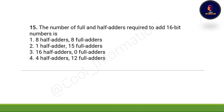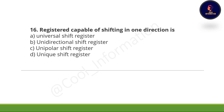Fifteenth question: The number of full and half adders required to add 16-bit numbers is — option 1, eight half adders and eight full adders; option 2, one half adder and 15 full adders; option 3, 16 half adders and zero full adders; option 4, four half adders and 12 full adders. The correct option is option 2: one half adder and 15 full adders.